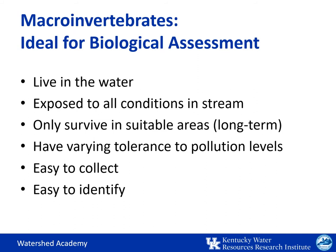In Kentucky, there are three different types of organisms used in biological assessments: fish, benthic macroinvertebrates, and algae diatoms. Of these, benthic macroinvertebrates provide the most robust indicator for the health of the stream.